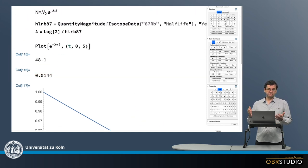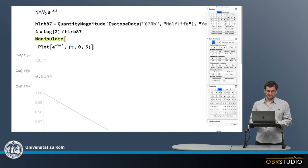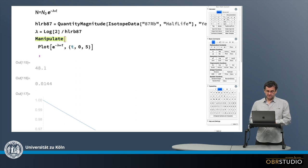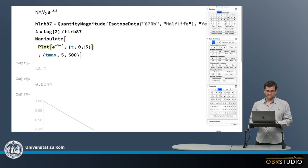And to make the real decay a little bit more visible, I make the maximum time selectable. So Tmax, I want to change from say 5 to 500 billions of years. So this Tmax will be changed.